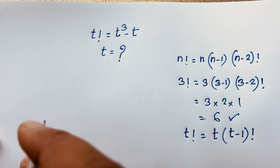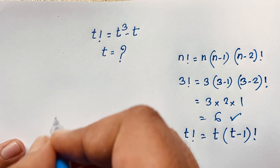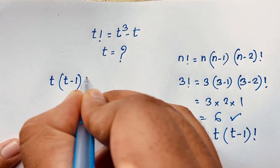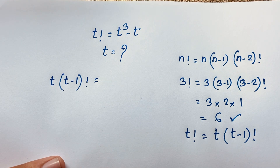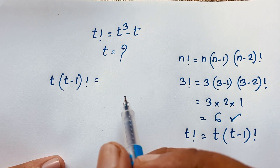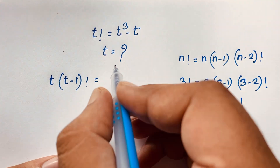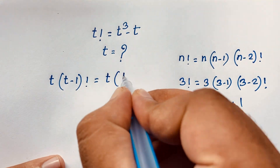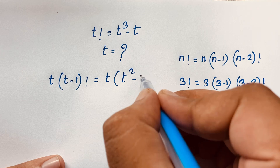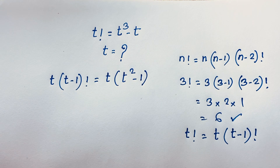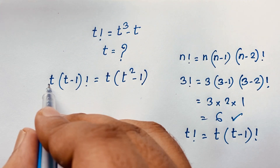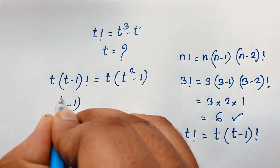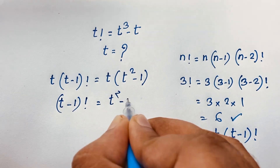Solution — let's start. Our question: t factorial is equal to t to the power 3 minus t. So t factorial equals t times (t-1) factorial. But here t³ minus t has a common factor of t. If I take out the common factor t, then t³ divided by t gives t², and t divided by t gives 1, so it becomes t(t² - 1). Now dividing both sides by t, the t's cancel out, giving: (t-1)! = t² - 1.